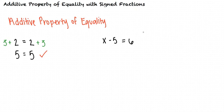the Additive Property of Equality lets us add 5 to both sides, giving us 5 plus x minus 5 equals 6 plus 5, which we can simplify to x equals 11.